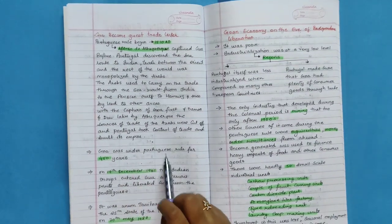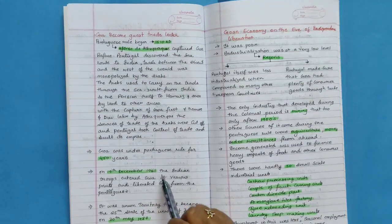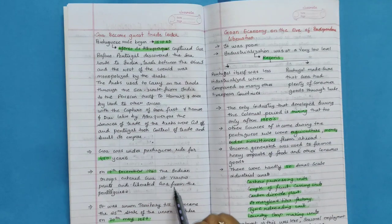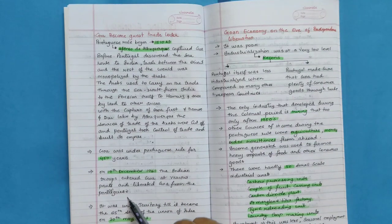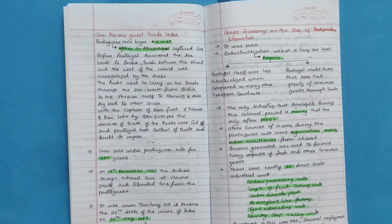With the capture of Goa and then Aden by Albuquerque, the source of trade of Arabs were cut off and Portugal took control of trade and built its empire. Goa was under Portuguese rule for 450 years. On 19 December 1961, the Indian troops entered Goa and liberated Goa from Portuguese. It was Union territory till it became the 25th state of the Union of India on 30th May 1987.